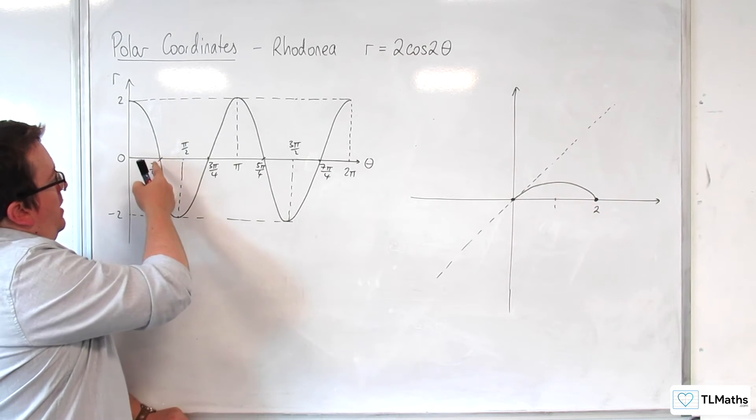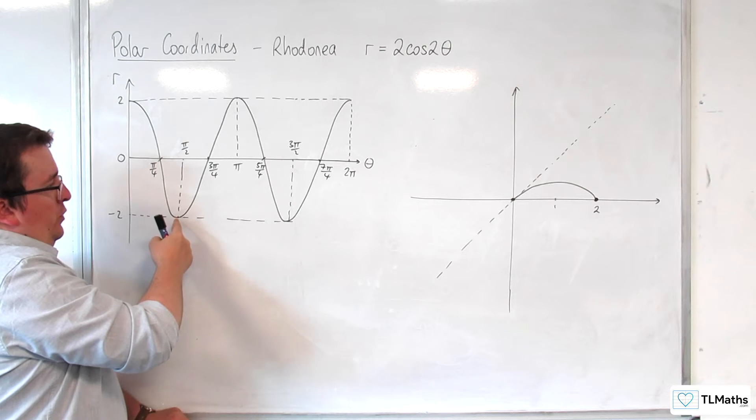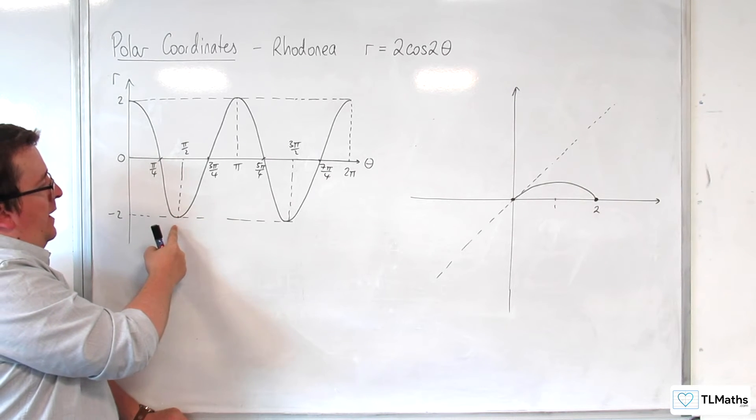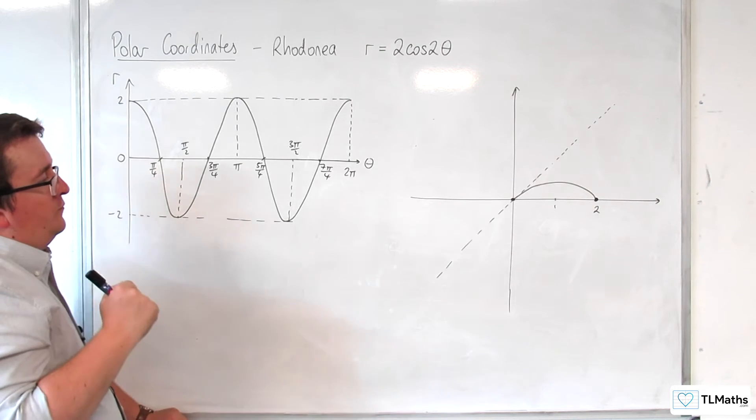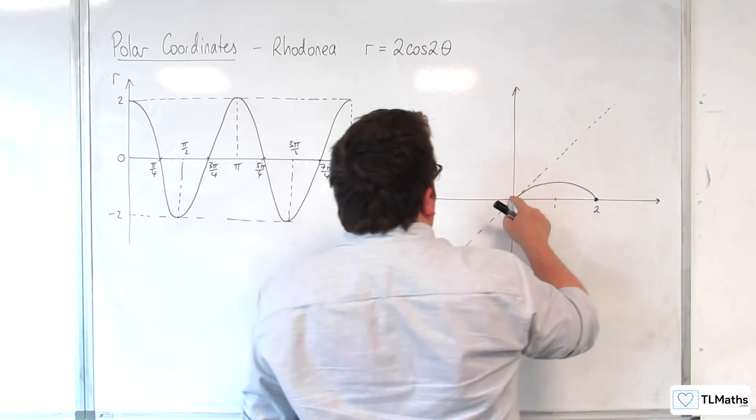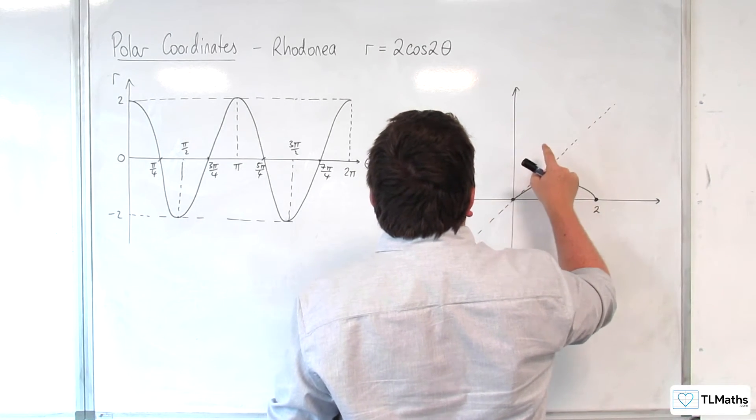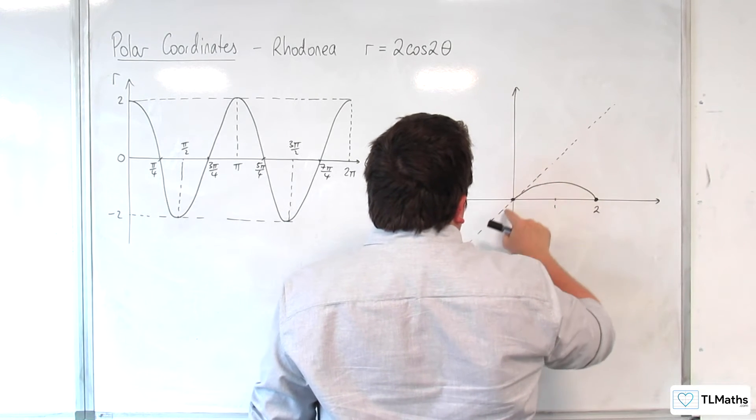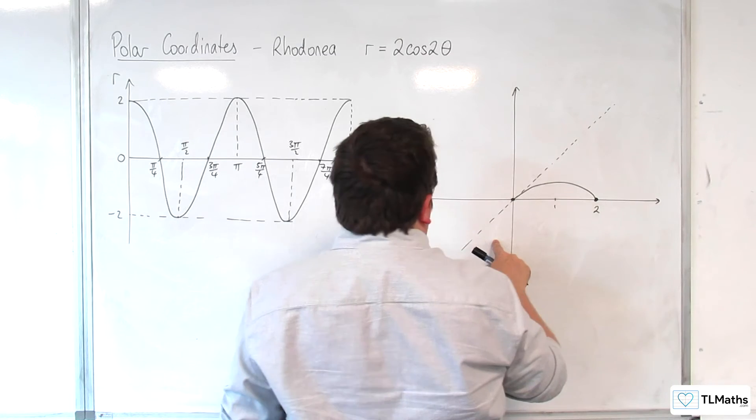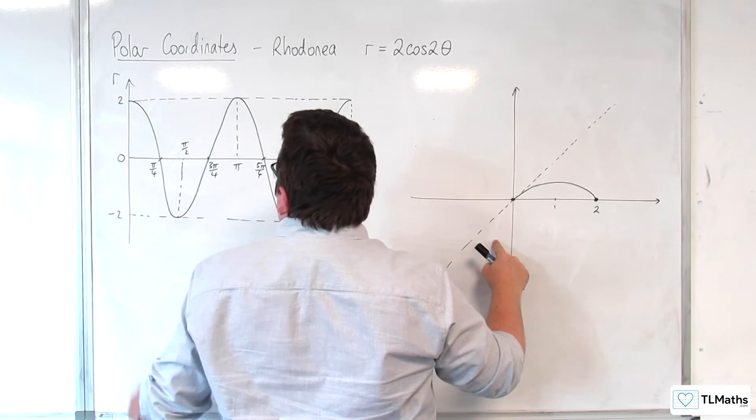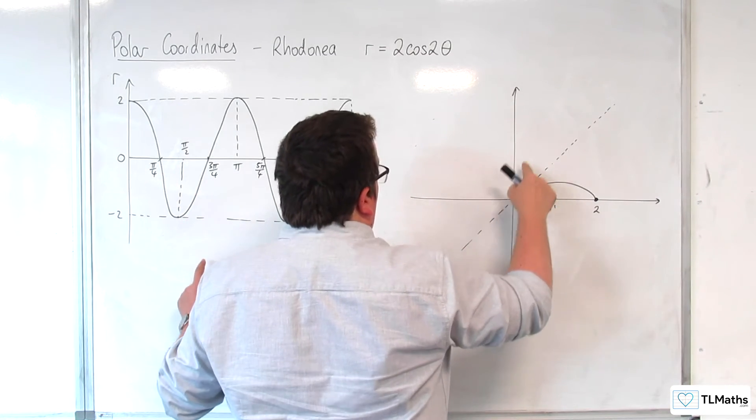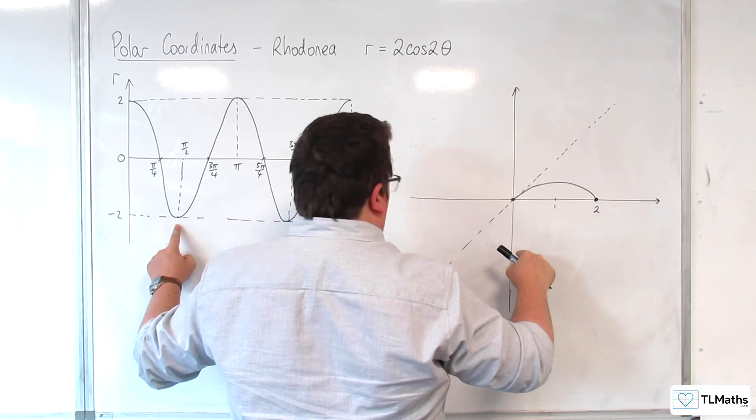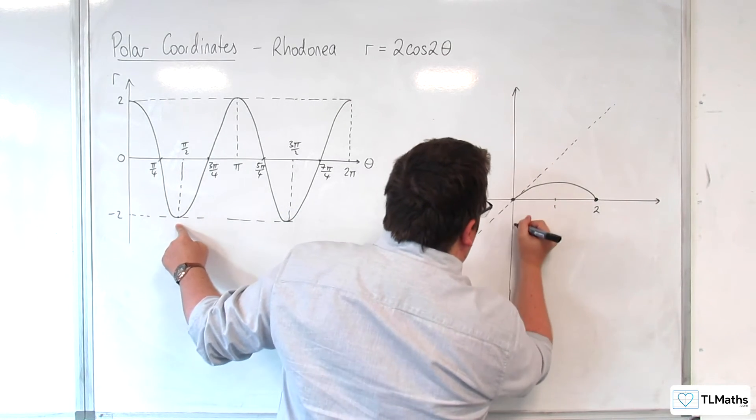Then, between pi over 4 and pi over 2, r goes negative. So whereas the points, if r was positive, would be positioned up here, that means that we're now down here. At pi over 2, when r is minus 2, would be down here. So, 1 minus 2 is down here.